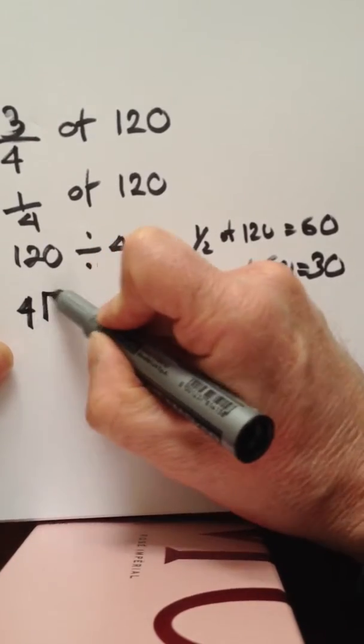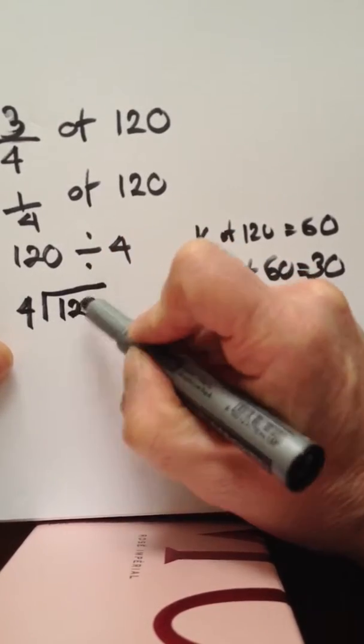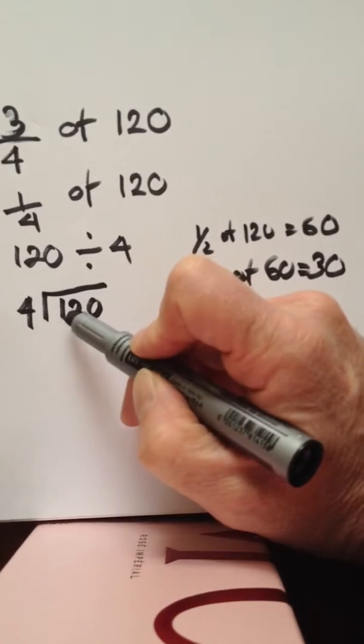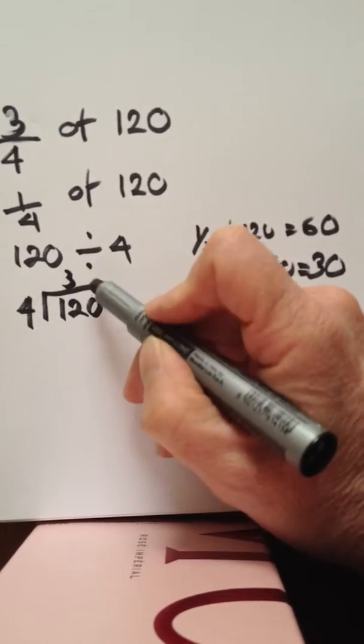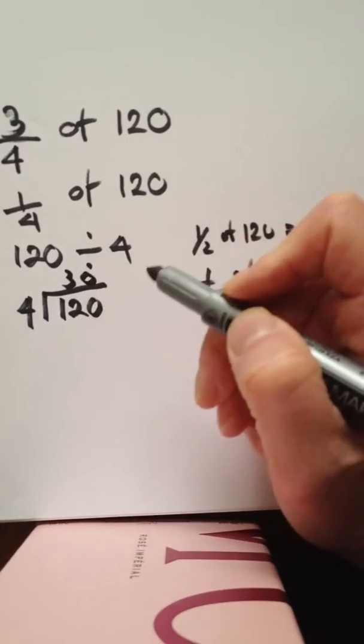Or we could do four into 120. Four doesn't go into one, four goes into twelve three times, and four goes into naught zero times.